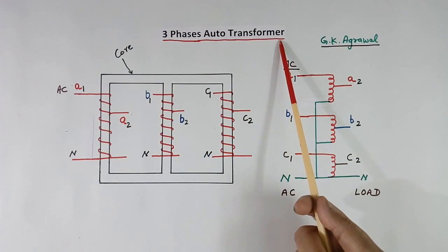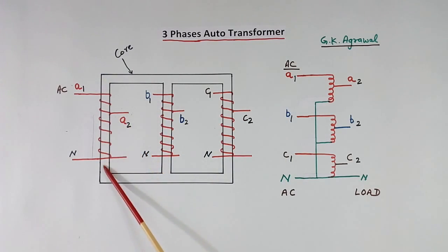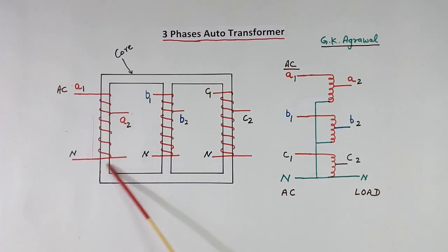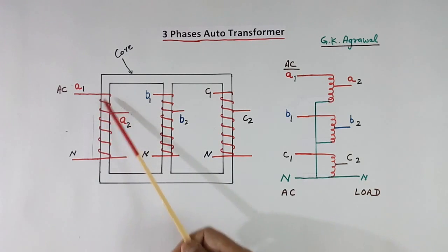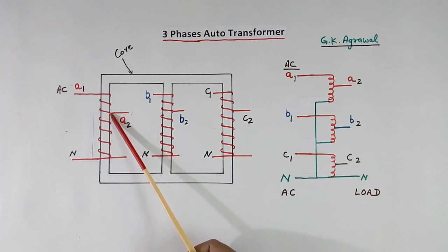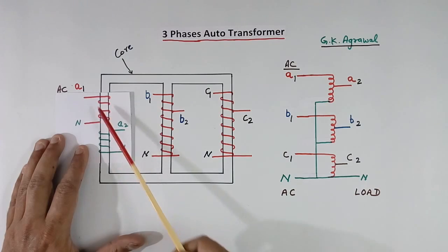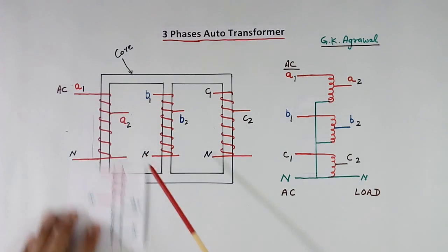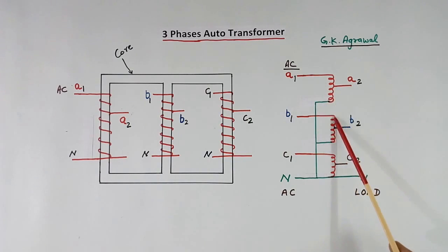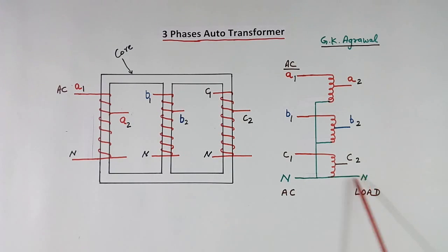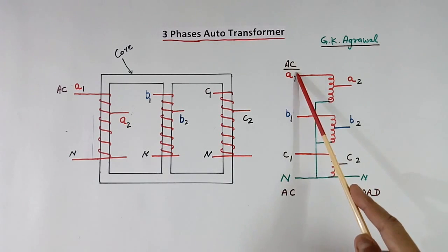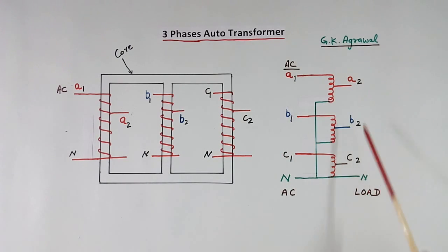This is a 3-phase auto transformer. This is the core and it has 3 windings — one for phase A, one for phase B, one for phase C. Each winding has only 1 coil, not 2. From that winding, AC input will be connected and at the tapping, the output load will be connected. In a normal transformer there will be 2 windings, primary and secondary, but here only one. One terminal of each winding is connected together and connected to neutral — this is a star connection. AC input is given here and load is connected here at A2, B2, and C2 in star mode.